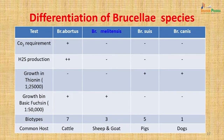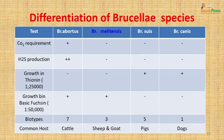To differentiate which Brucella species was involved, various tests were done. For CO₂ requirement, the organism could grow even in the absence of CO₂, pointing to either melitensis, suis, or canis. H₂S production was absent. Growth in the presence of thionine was not seen while growth in the presence of basic fuchsin was seen, indicating likely Brucella melitensis — commonly transmitted to man by sheep and goats, with three biotypes. Brucella abortus, suis, and canis are obtained from cattle, pigs, and dogs respectively, with seven biotypes of abortus, five of suis, and one of canis.